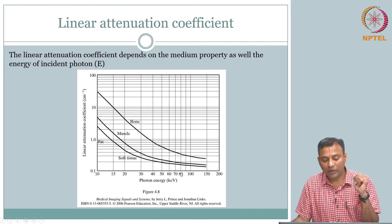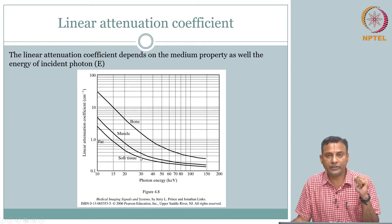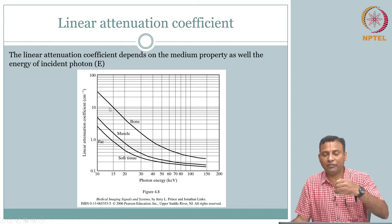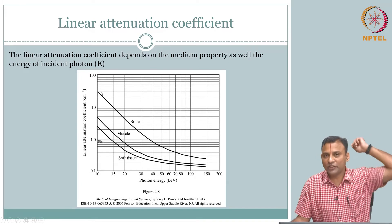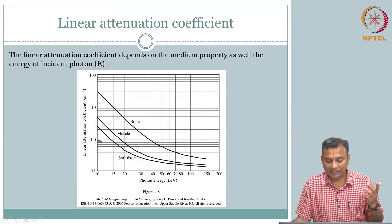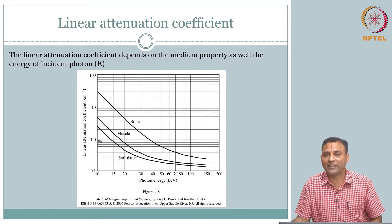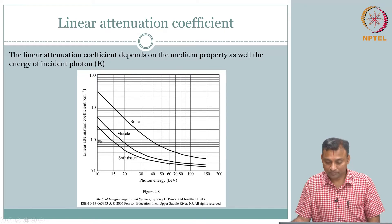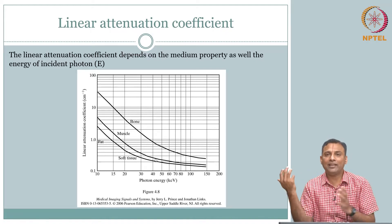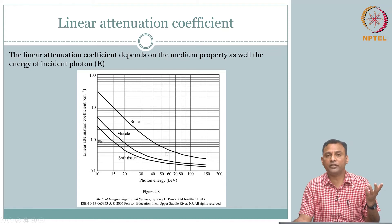You may want to use lower energies where the separation between materials is larger, but the challenge is: if you use too low an energy, everything gets absorbed in the body and you won't get any signal to detect. On the other hand, if the energy is too high, attenuation will be less and you can get photons through transmission, but there will be minimal interaction — you won't be able to differentiate between different tissues.